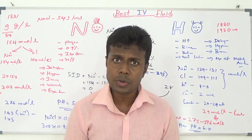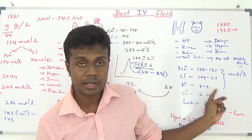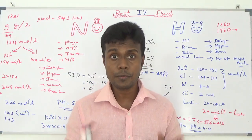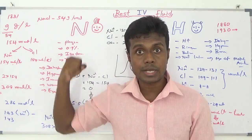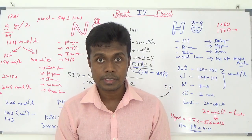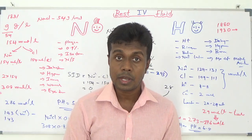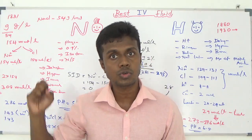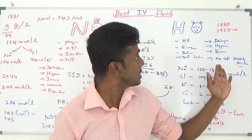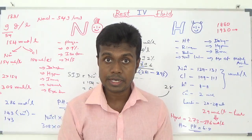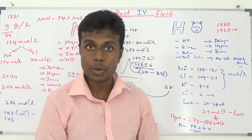You have to carefully select fluid for each and every patient according to their clinical situation. If you find a patient with hyperkalemia, giving Hartmann solution can cause a little bit higher potassium. If you find a patient with metabolic acidosis, giving normal saline can cause more acidosis — in that case you have to shift to Hartmann solution. If you find a patient with hypernatremia, giving normal saline can worsen the condition, but giving Hartmann — which contains only 129 to 131 sodium — can help correct it as it is a slightly hyponatremic solution.